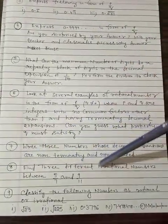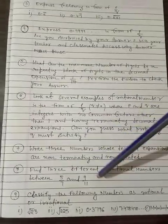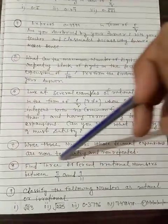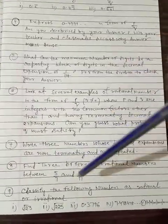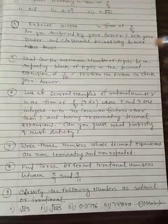Question number 8: Find three different irrational numbers between 5 by 7 and 9 by 11. One example is based on this type of question. So please do it yourself.